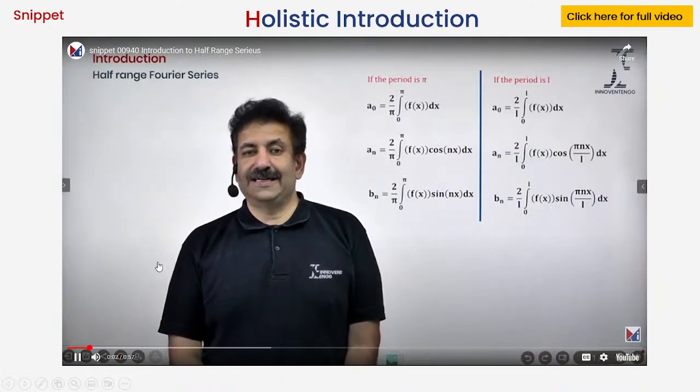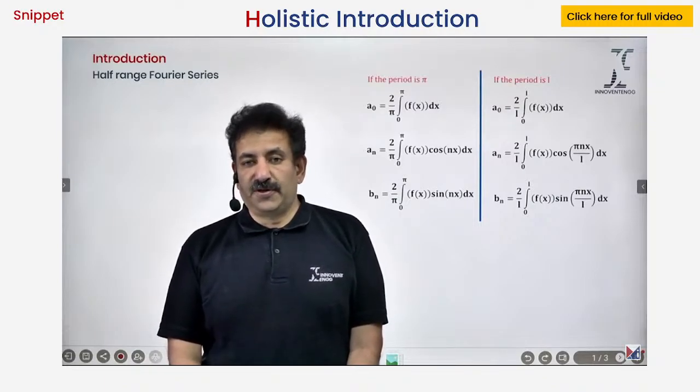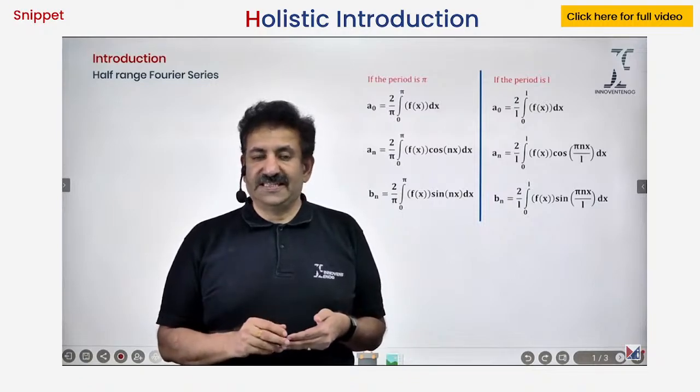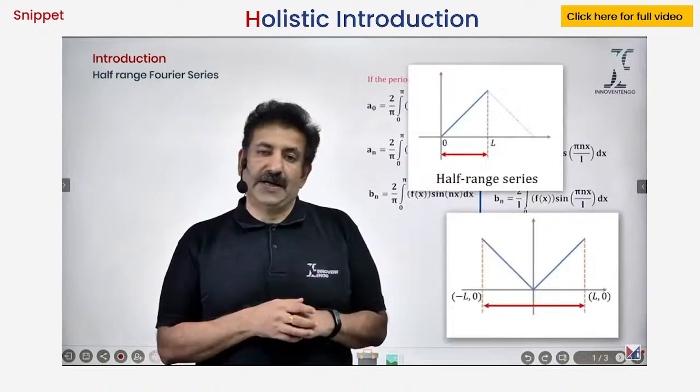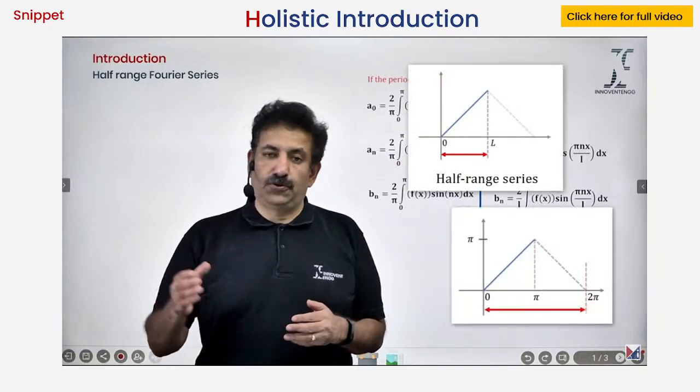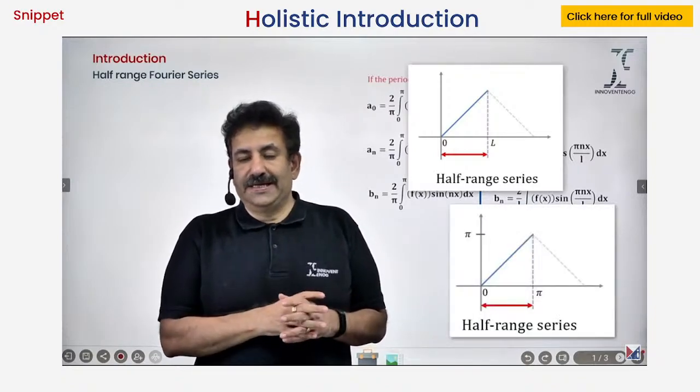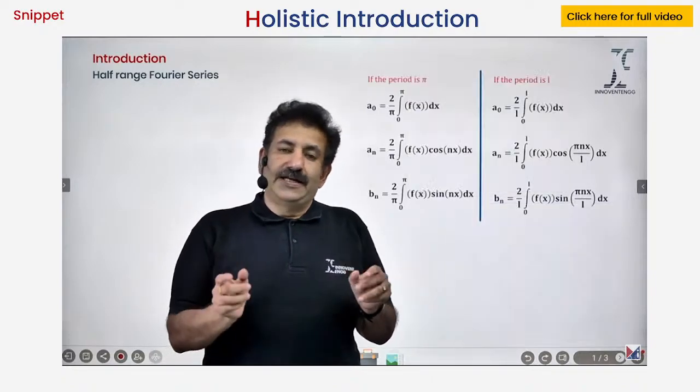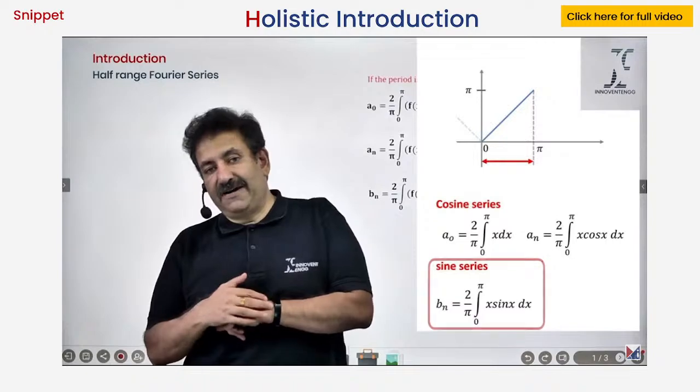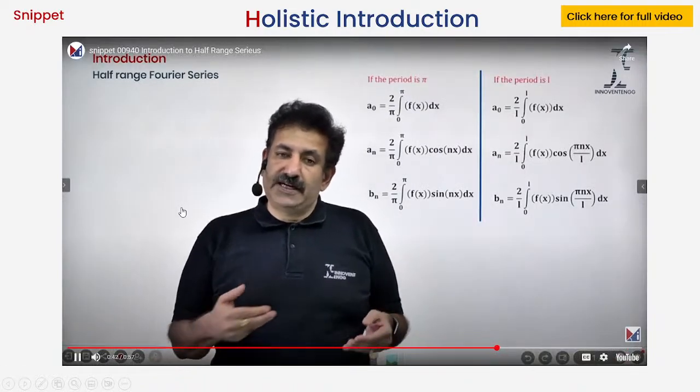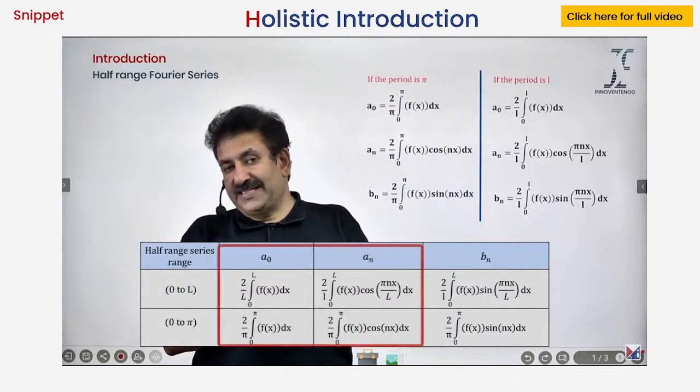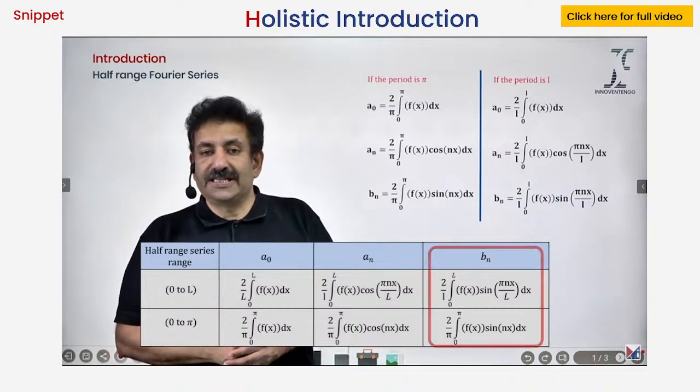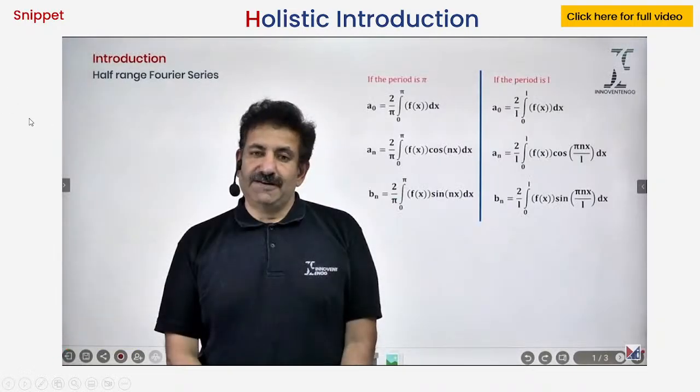Now let's try and understand the half range series, which is also a very important component of learning in Fourier series. In many situations, you may be interested in the range 0 to L rather than minus L to plus L or 0 to 2L or 0 to 2 pi. You may be just interested in the range 0 to pi. In such situations, we resort to the half range series. Here, you can either be dealing with the cosine half range series or sine half range series. It would be absolutely specified. You will have to find out only A0 and AN if you are asked to develop half range cosine series. Be mindful of that. And if you are asked to develop half range sine series, you are just supposed to calculate the B.